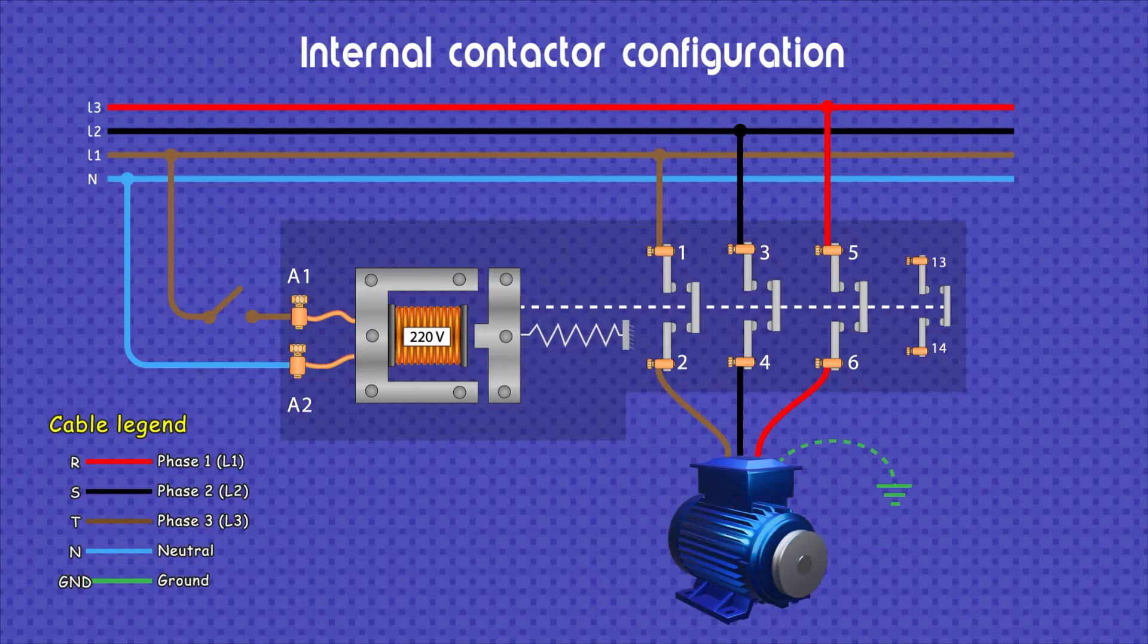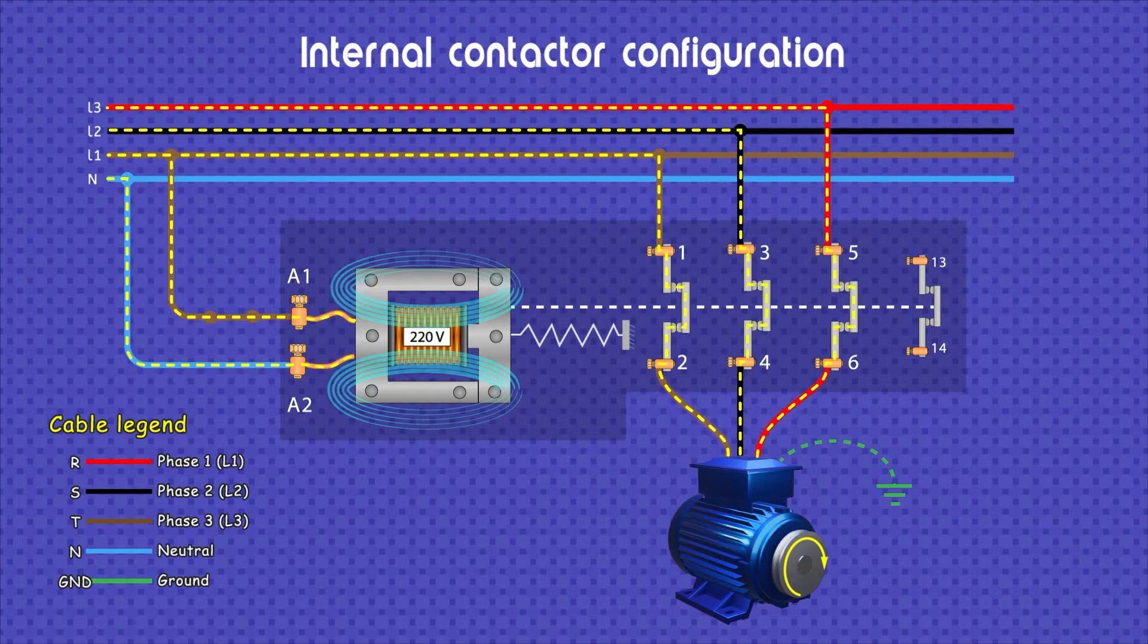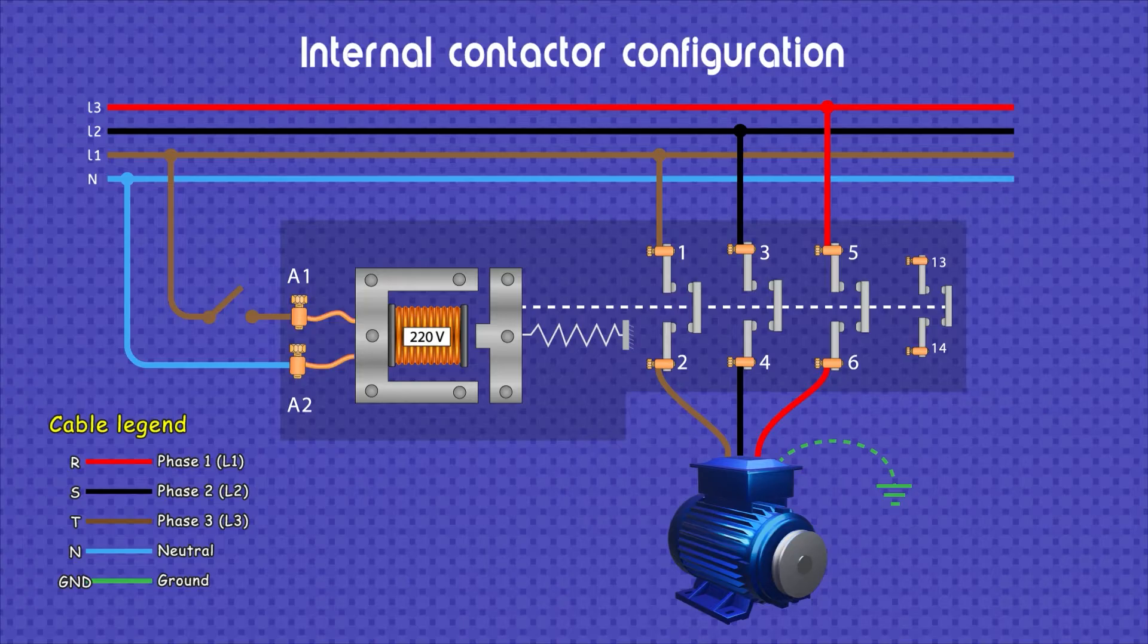The current that is generated at the beginning when the coil is excited is a very high current. That's why the stock and the hammer are joined so that this current decreases and the coil does not break down. When the coil is de-energized, the moving part returns to its default state due to the spring. This opens the contacts and prevents current from flowing to the motor.